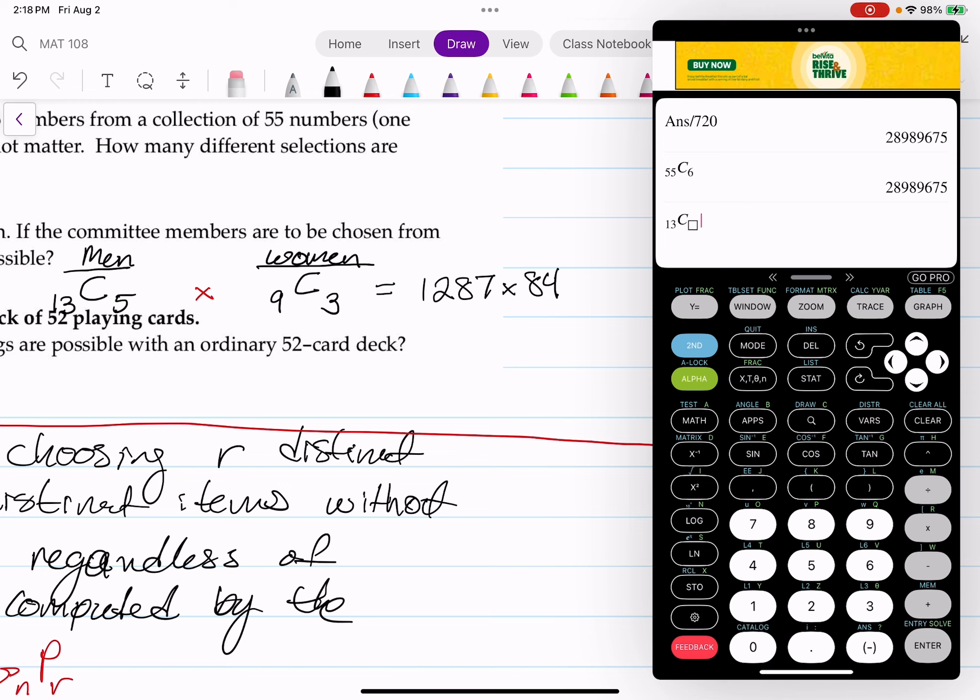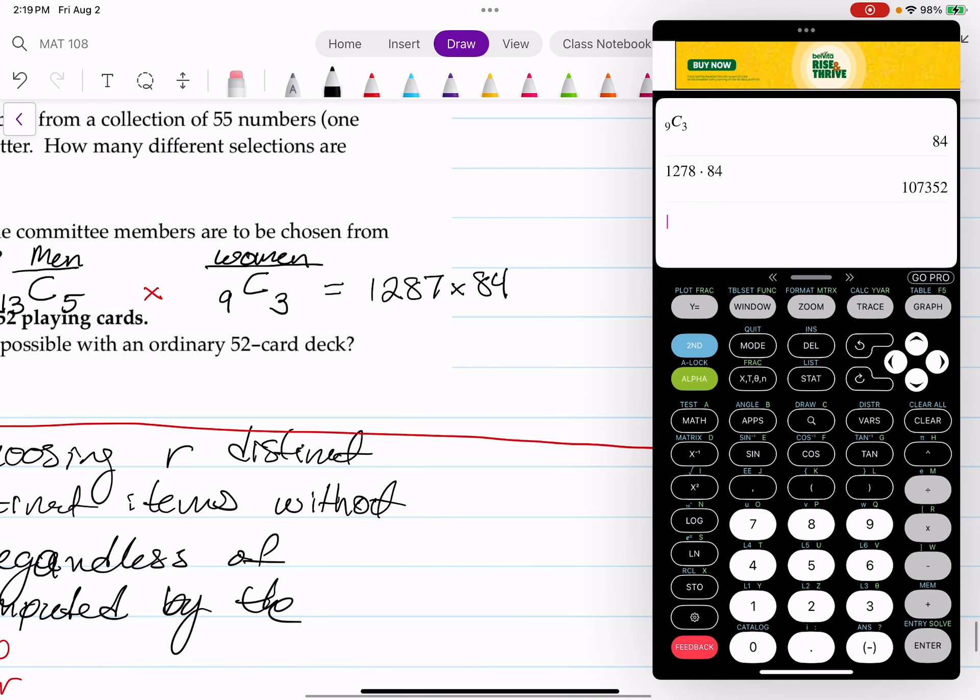And then we're going to do the combination of 9 and 3. Oh my gosh, man, keep calling my phone. I finally had to disconnect my iPad from my iPhone. If you know, you can put in the comments. Now let's multiply times 84 and that equals to 107,352 possible committees.